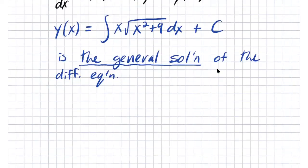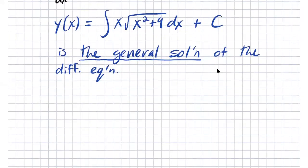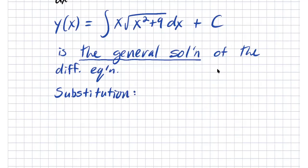So how do we solve this? This is Calculus 2. We use substitution to compute this integral. Let u equal x squared plus 9, and then du equals 2x dx.